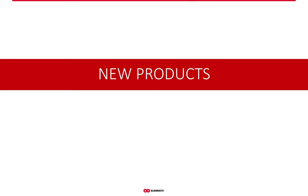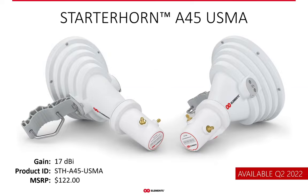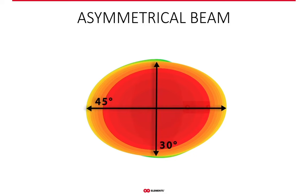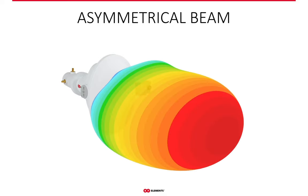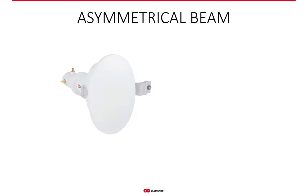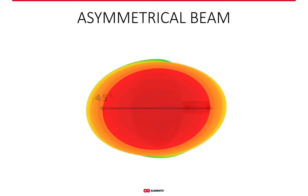Let's now have a look at our completely new products. Starter Horn A45 is the newest addition to the starter antenna group — antennas suitable for operators starting out with RF Elements technology or those not ready to commit to a twistport ecosystem for whatever reason. Starter Horn A45 has 17 dBi gain, an asymmetrical radiation pattern, and attractive pricing. The radiation pattern is 45 degrees in the azimuth plane and 30 degrees in the elevation plane. The asymmetrical pattern increases the gain of the antenna and makes it more useful in terrains that are not extremely mountainous and have middle customer density.